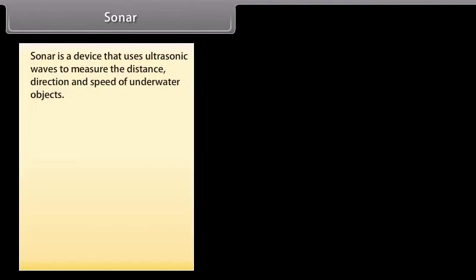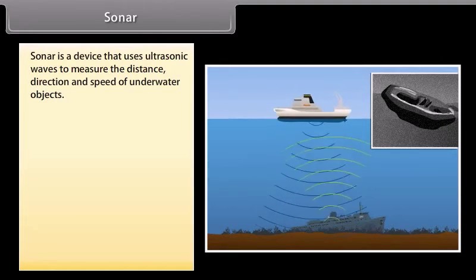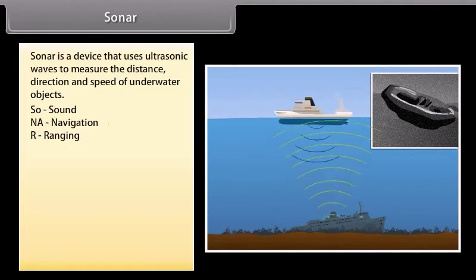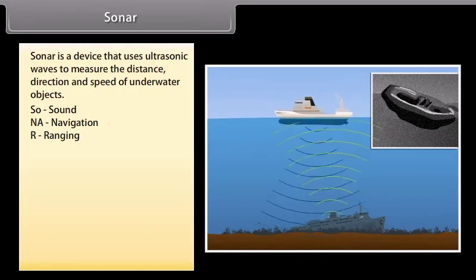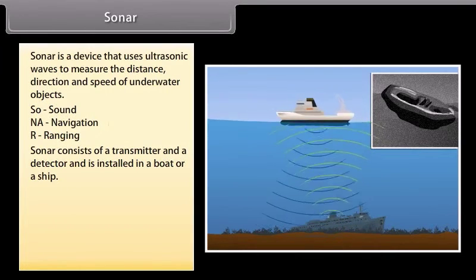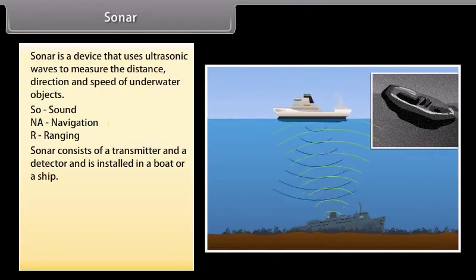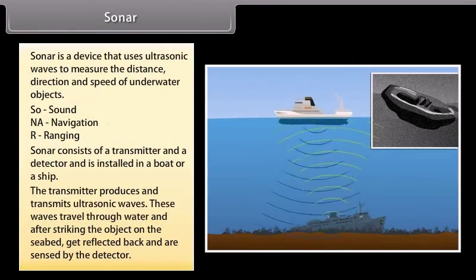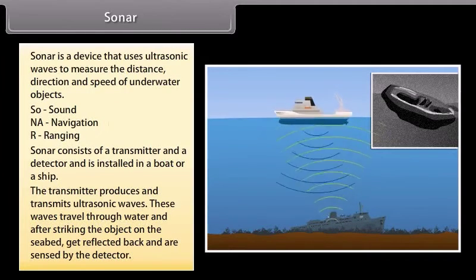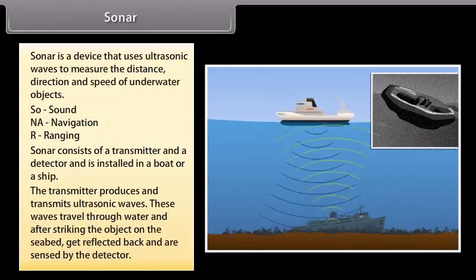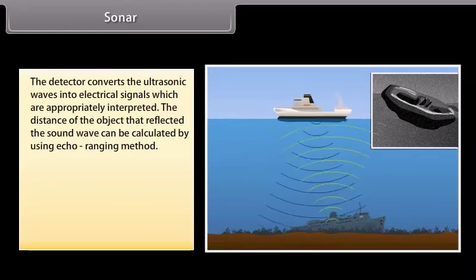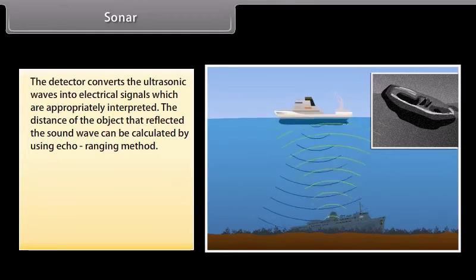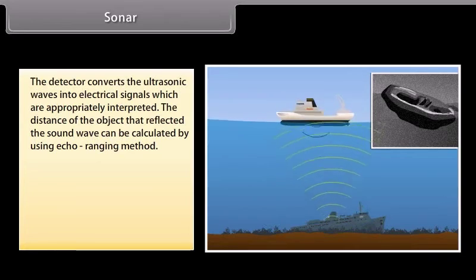Sonar is the device that uses ultrasonic waves to measure the distance, direction and speed of underwater objects. The word sonar stands for sound navigation and ranging. Sonar consists of a transmitter and a detector and is installed in a boat or a ship. The transmitter produces and transmits ultrasonic waves. These waves travel through water and after striking the object on the seabed get reflected back and are sensed by the detector. The detector converts the ultrasonic waves into electrical signals which are appropriately interpreted.